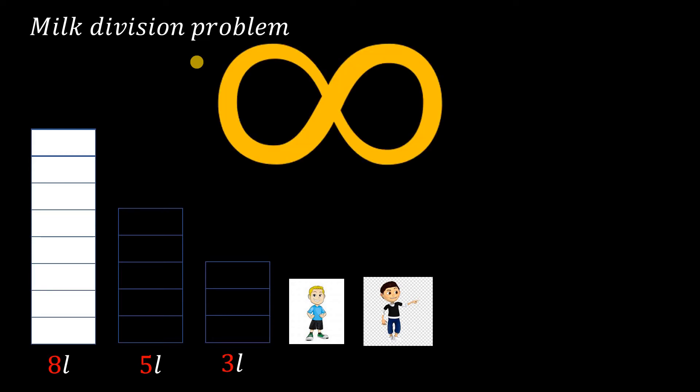For this purpose we can use a simple strategy which I call the infinity method, which is quite interesting. First, I draw a sign of infinity and put the numbers eight, five, and three at positions on it, denoting the eight-liter jar, the five-liter jar, and the three-liter jar respectively.